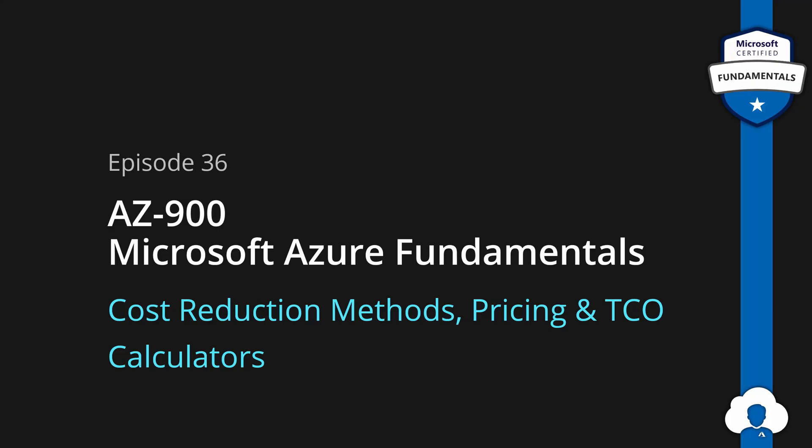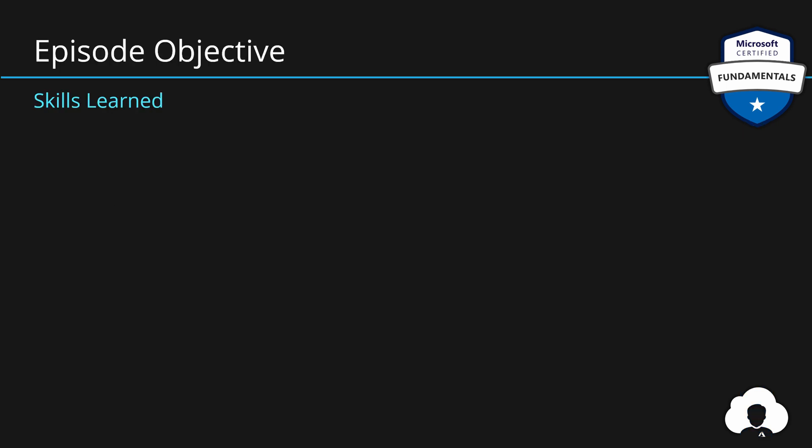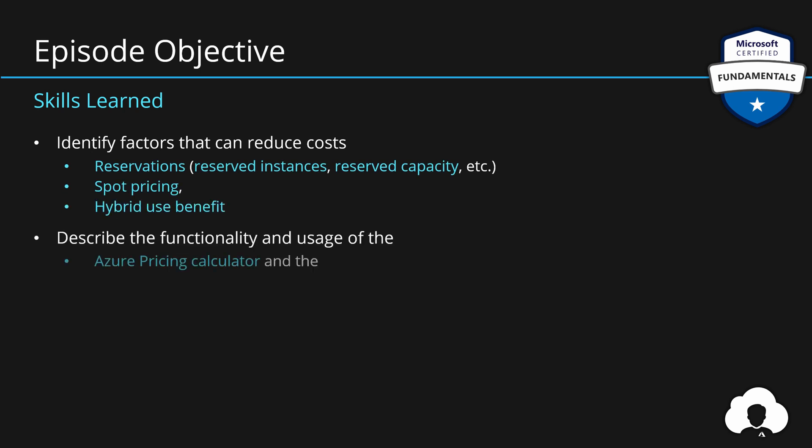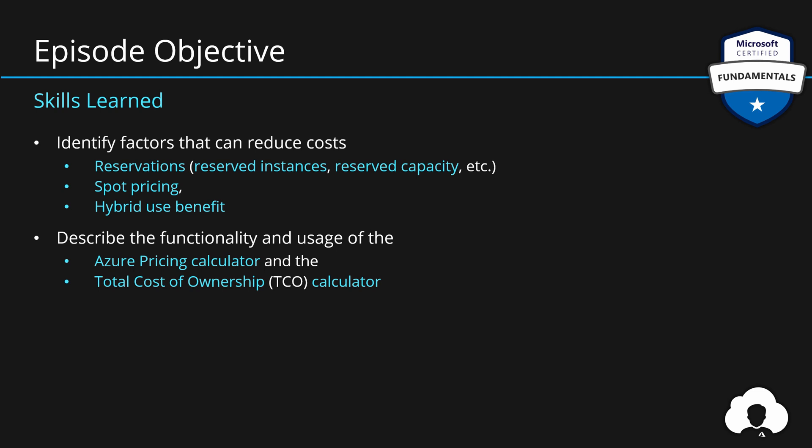In episode 36 we will learn about multiple ways to reduce the cost of our Azure services. We'll also discover two tools — the pricing and TCO calculator — which help us during this process. We'll first focus on the factors that can reduce cost, including Azure reservations, spot pricing for virtual machines, and hybrid use benefits. But let us start with reservations.